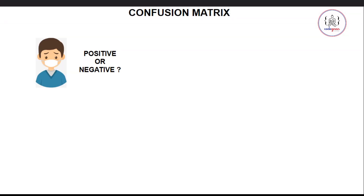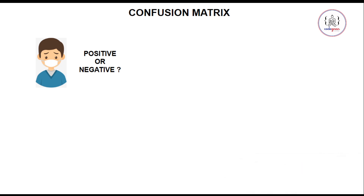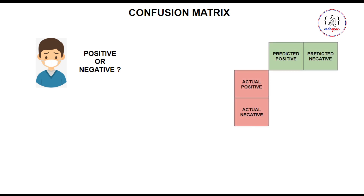Now there are certain terms in confusion matrix that might be confusing, so we are going to talk about those. After this video, I am sure you won't have any confusion. We have the predicted classes and also the actual classes of the patient. Here we have predicted positive and actual positive — actual classes shown in red and predicted classes by our model shown in green.